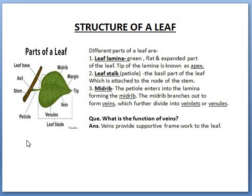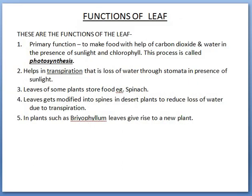The next topic is the functions of a leaf. The first and primary function of a leaf is to make food with the help of carbon dioxide and water in the presence of sunlight and chlorophyll. This process is called photosynthesis. You must have already studied about this process in your previous classes. This is the major function of a leaf — to do the process of photosynthesis.